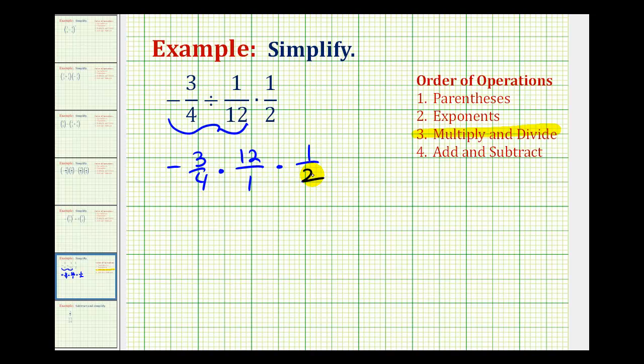So now we just have a product of three fractions. But before we multiply, we do want to simplify out all the common factors between the numerators and denominators. And I think it's helpful to write everything out in prime-factored form to make sure we identify all of the common factors.